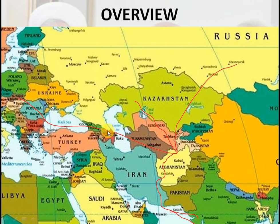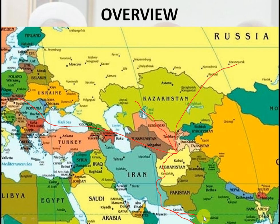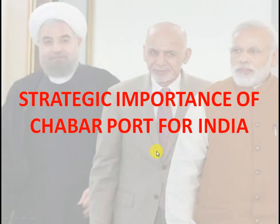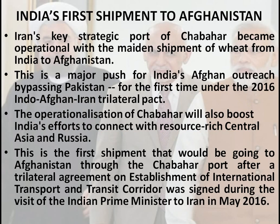If you know about the North-South Transport Corridor, that connectivity can be established. Moreover, with the China-Pakistan Economic Corridor already in place, India needs this alternative route. Regarding strategic importance for India, today you can see that India has made its first shipment to Afghanistan through Chabahar port, because Pakistan has not given us this route.